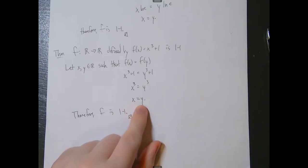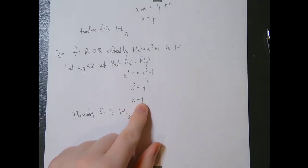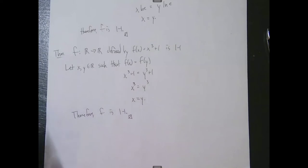Whenever you see a proof that a function is one-to-one, always start by letting x and y be in the domain such that f(x) = f(y), then show that x = y. I cannot stress that enough — please remember to do this on your homework.